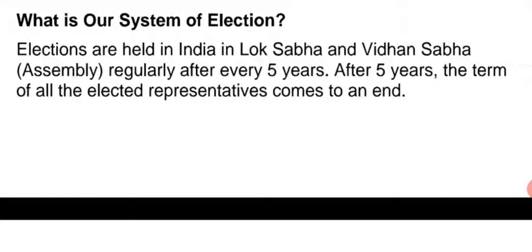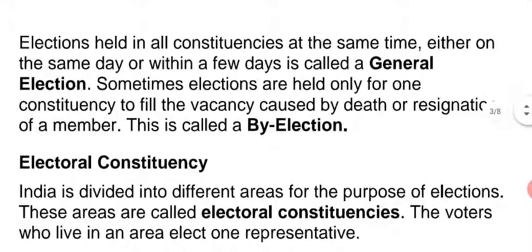Elections are held in India for Lok Sabha and Vidhan Sabha (assembly) regularly after every five years. In India's election system, Lok Sabha and Vidhan Sabha elections are held directly — people vote directly. After five years, the term of all elected representatives comes to an end. Elections are held in all constituencies at the same time, either on the same day or within a few days, and this is called the general election.